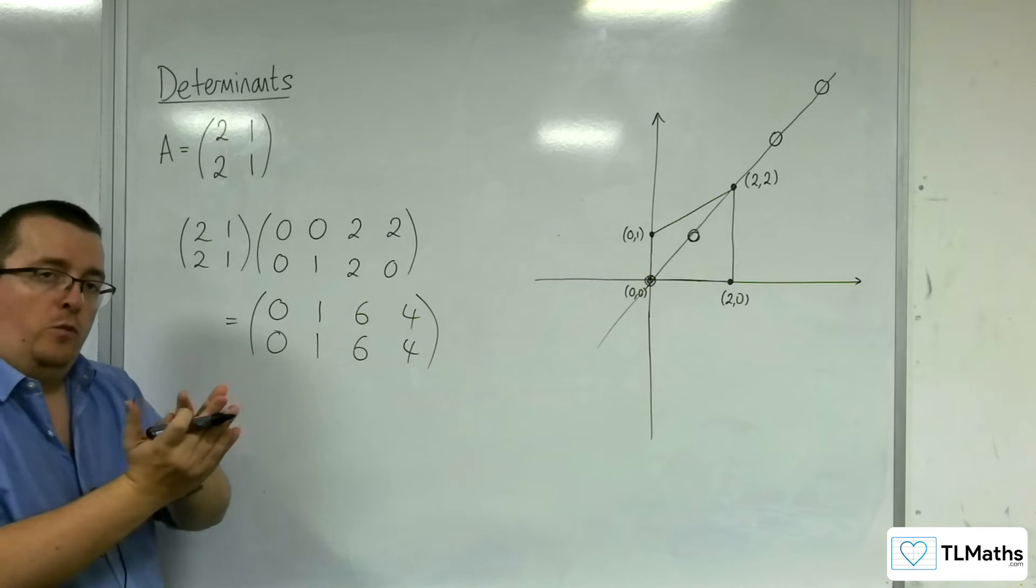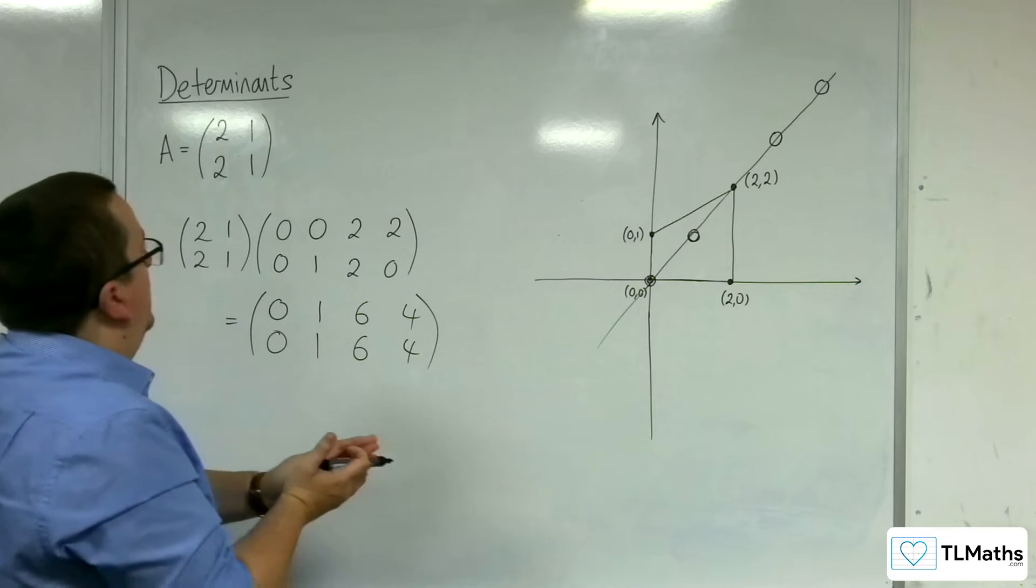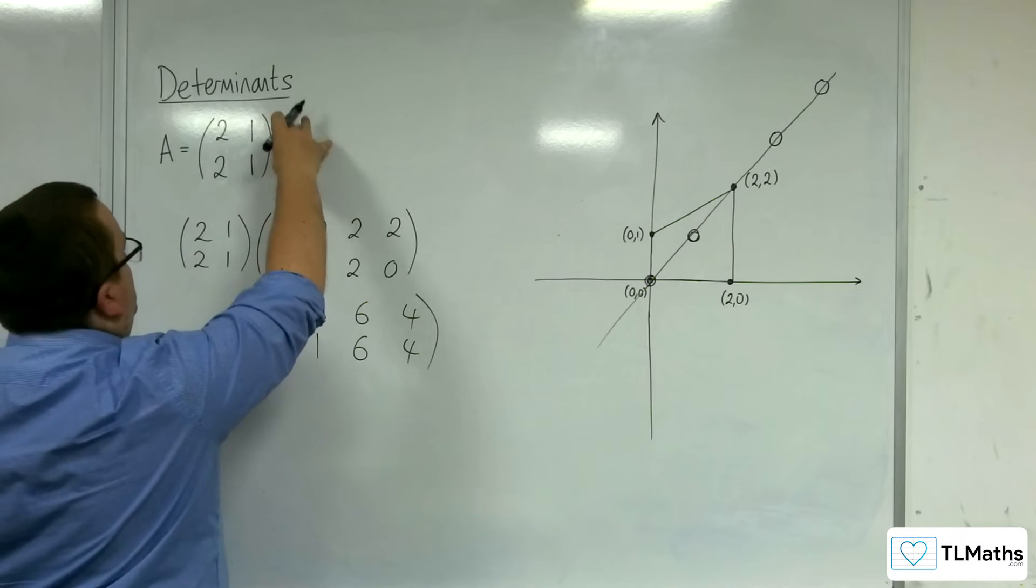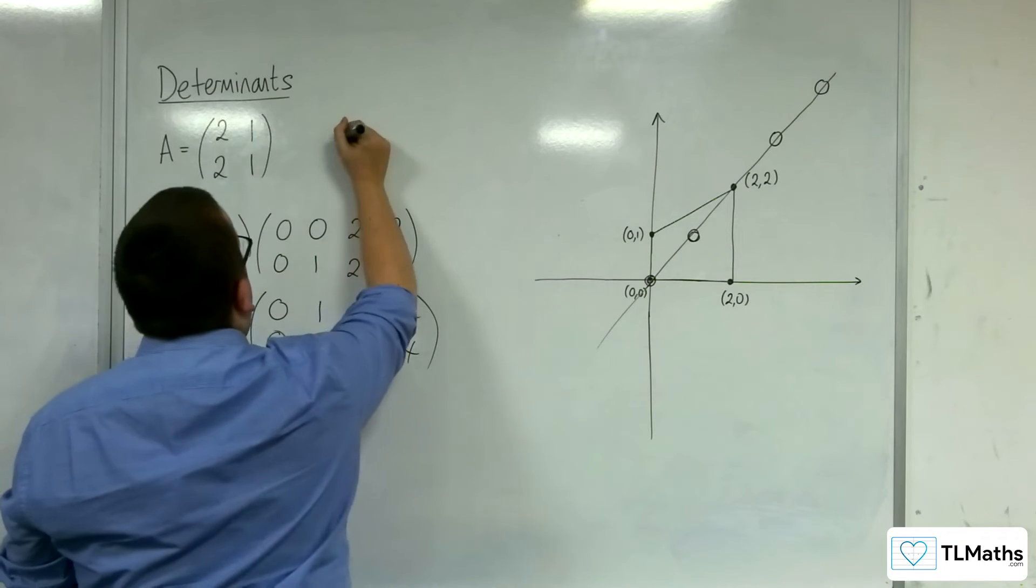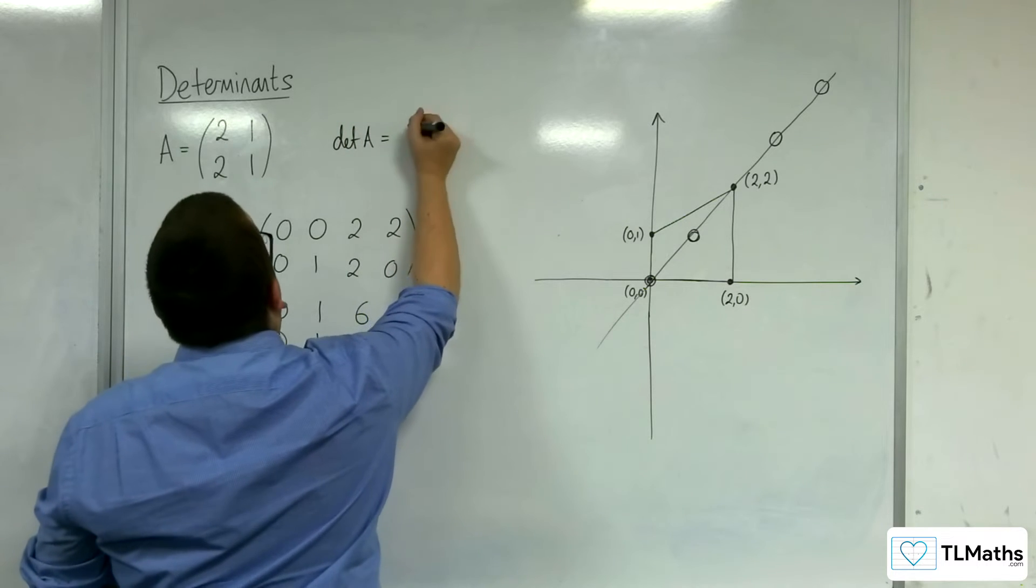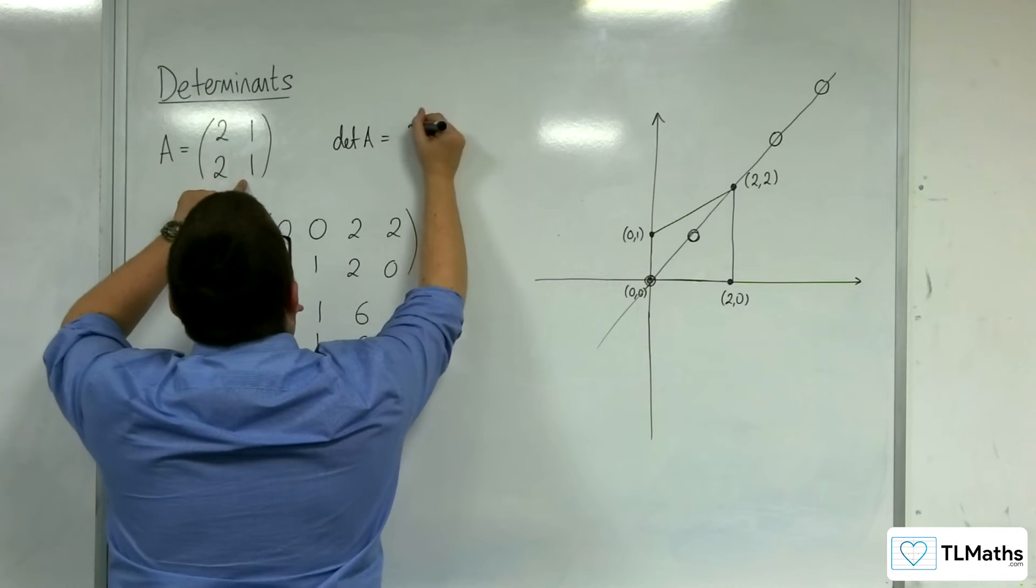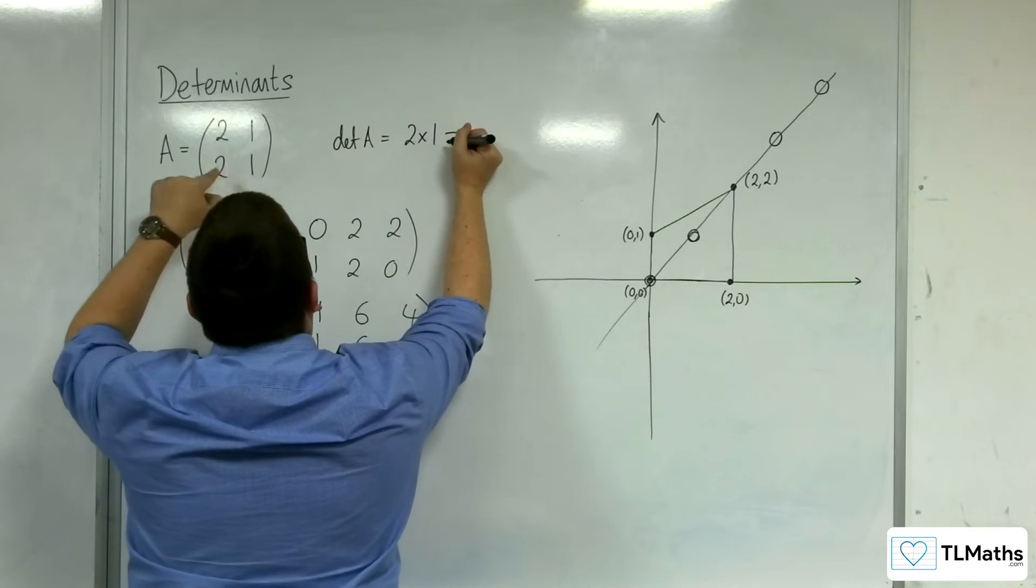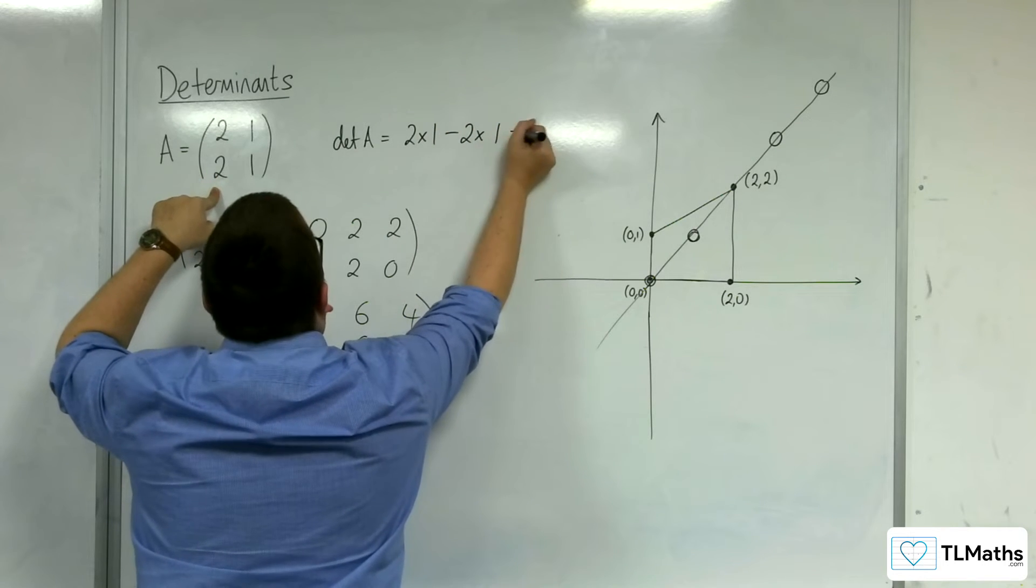Now, how could we have determined that? Well, if we have a look at the determinant of this matrix, so the determinant of matrix A, would be 2 times 1, take away 2 times 1, which is 0.